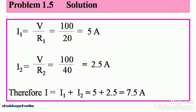Therefore, I, that is the total current, is equal to I1 plus I2, the sum of the currents, which gives you 5 plus 2.5 equals 7.5 amperes, and this is your answer. We'll look at some more problems and more concepts in the next sessions to come.